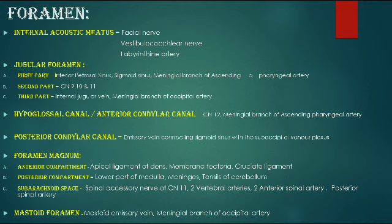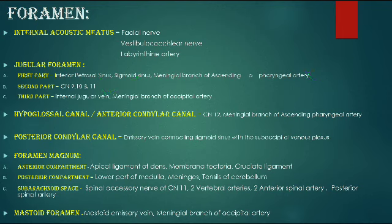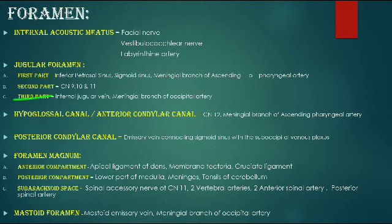CN IX, X, and XI pass through the middle part of the jugular foramen. The inferior petrosal sinus and the sigmoid sinus drain into the anterior compartment of the jugular foramen, along with the meningeal branch of the ascending pharyngeal artery.